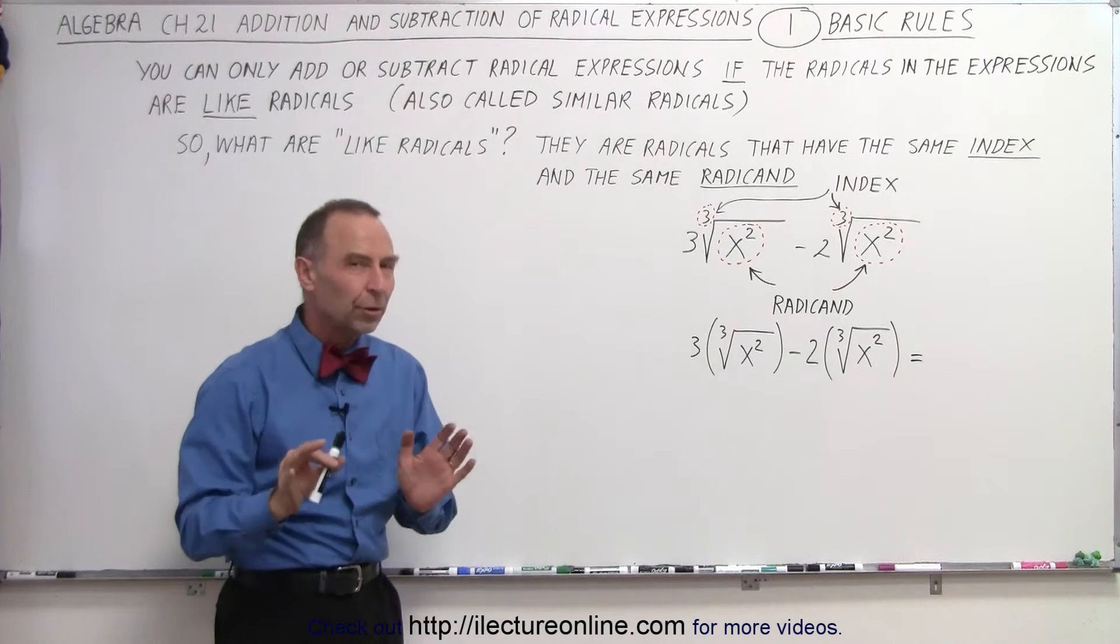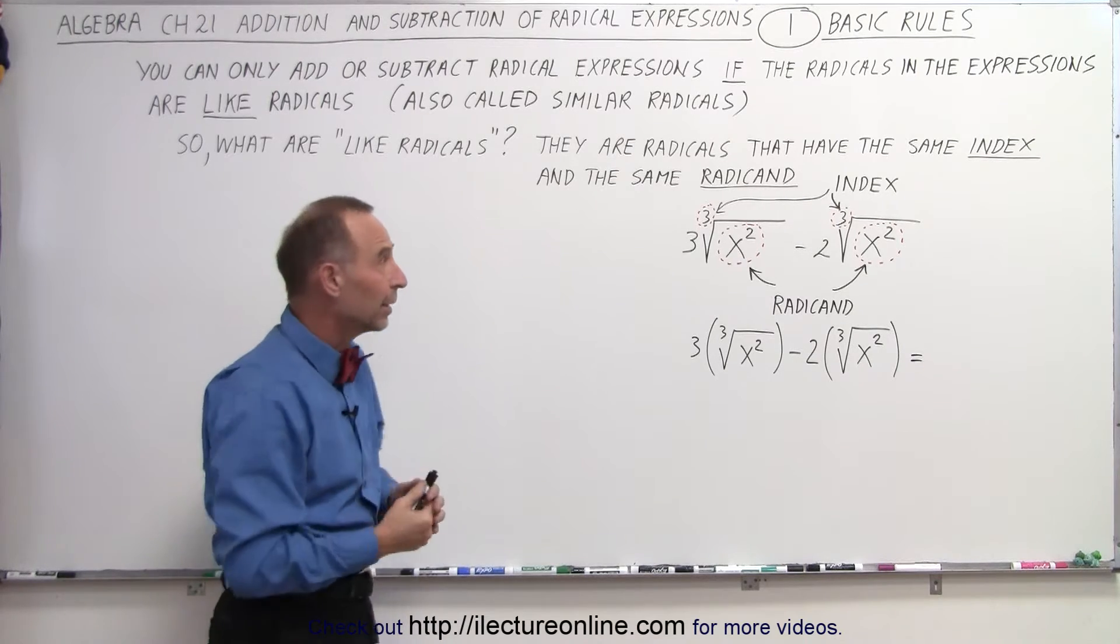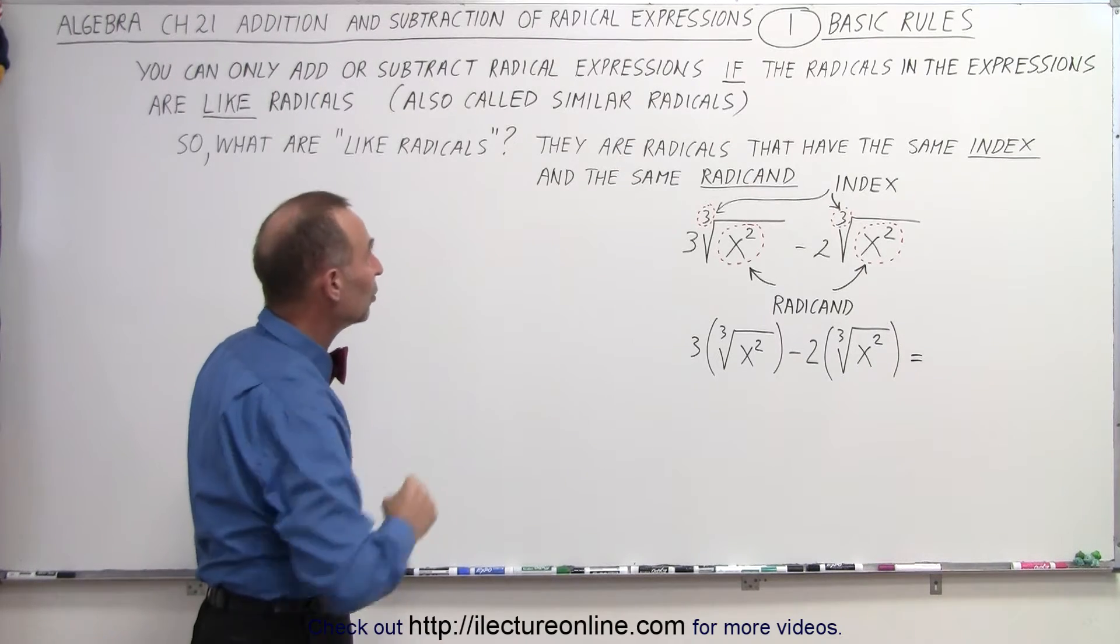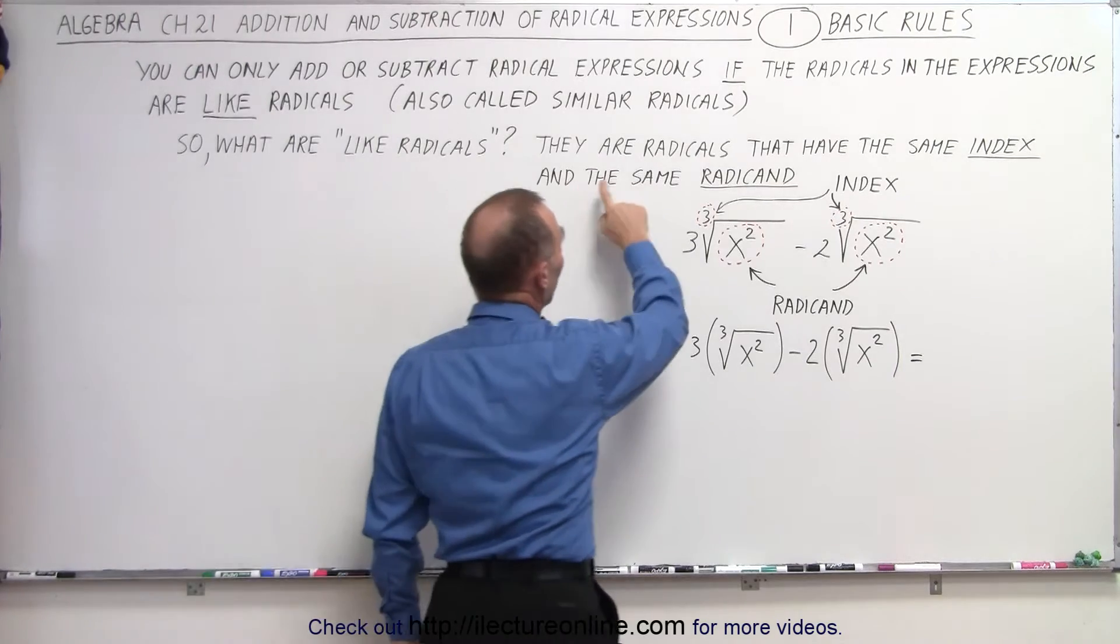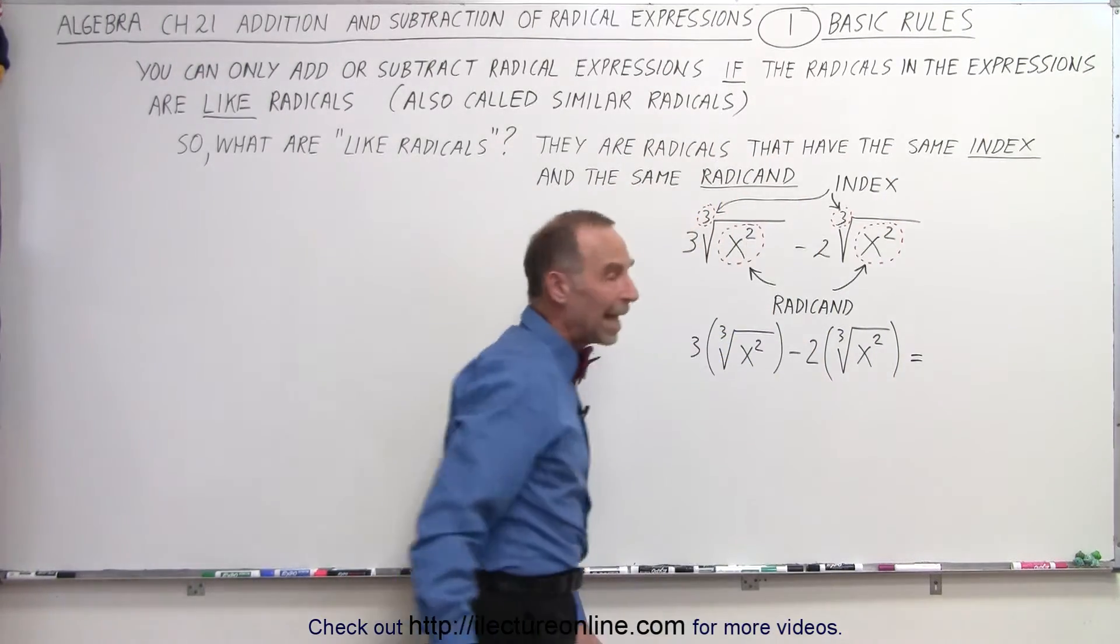They're also called similar radicals. So what makes radicals alike? They're alike if they meet these two conditions: they are radicals that have the same index and the same radicand.